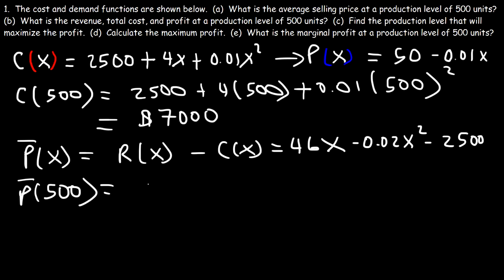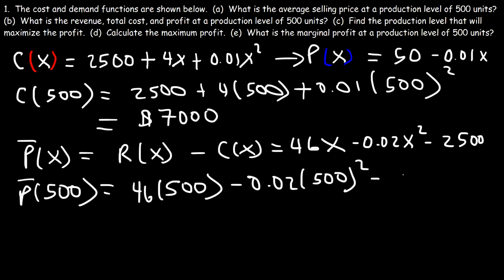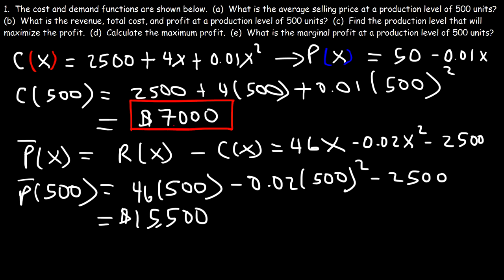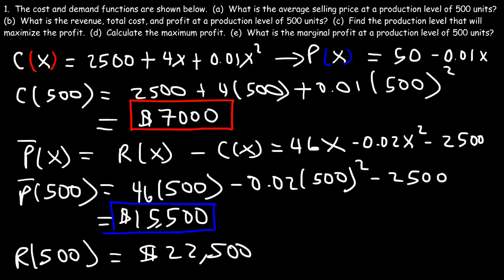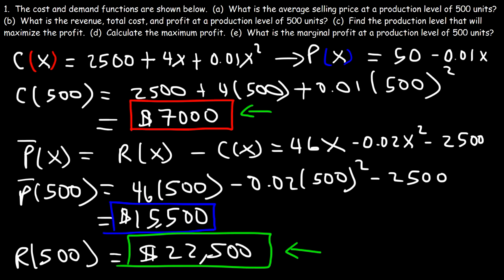Calculating the profit at a production level of 500: 46 times 500 minus 0.02 times 500 squared minus 2500 gives a profit of $15,500. So the total cost at 500 units is $7,000, the profit is $15,500, and the revenue was $22,500. This makes sense because $22,500 minus $7,000 equals $15,500 — profit is the difference between revenue and cost.